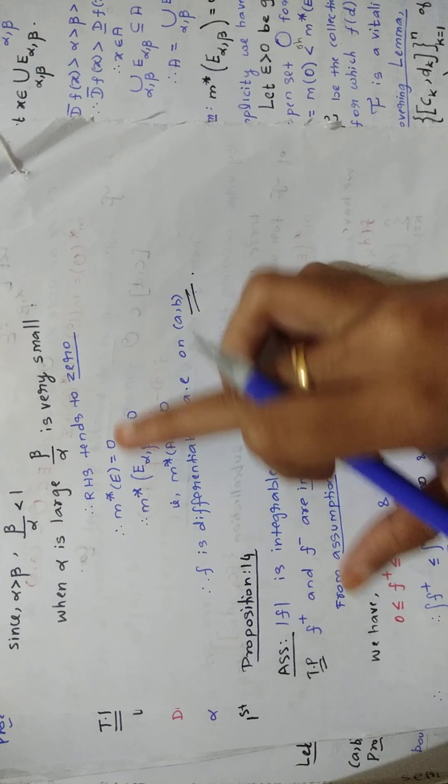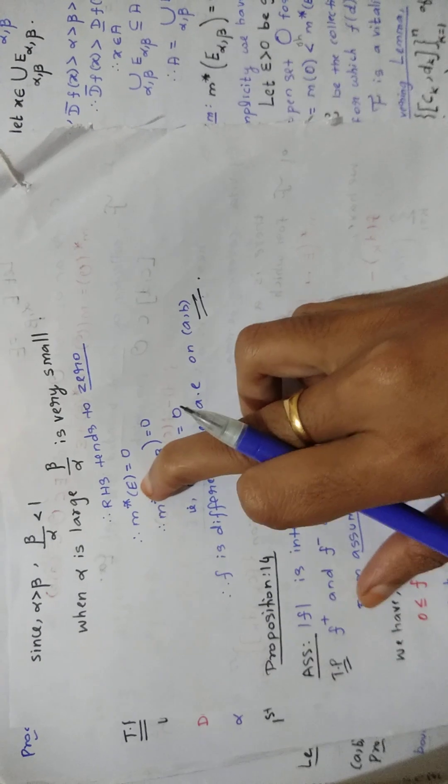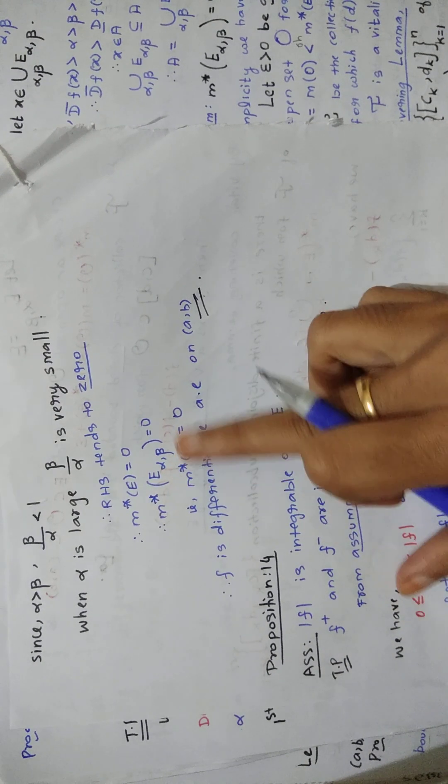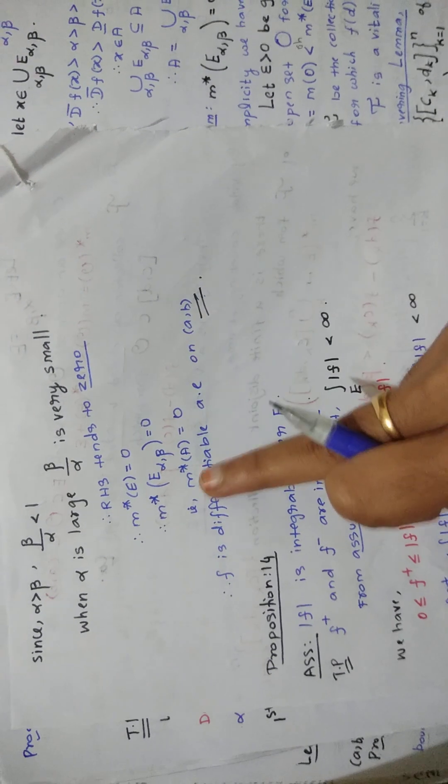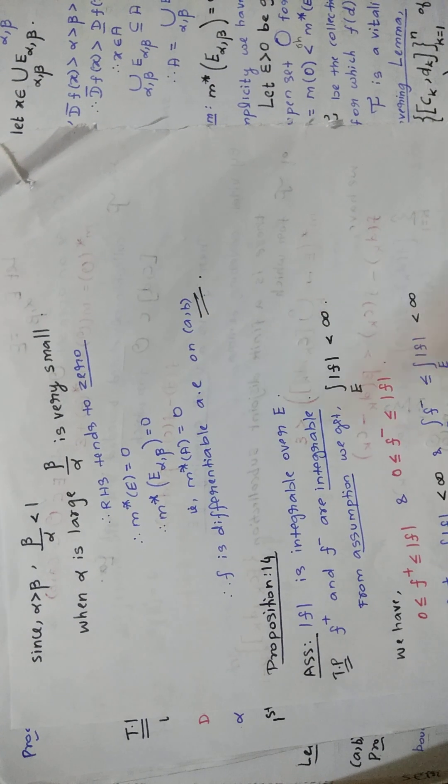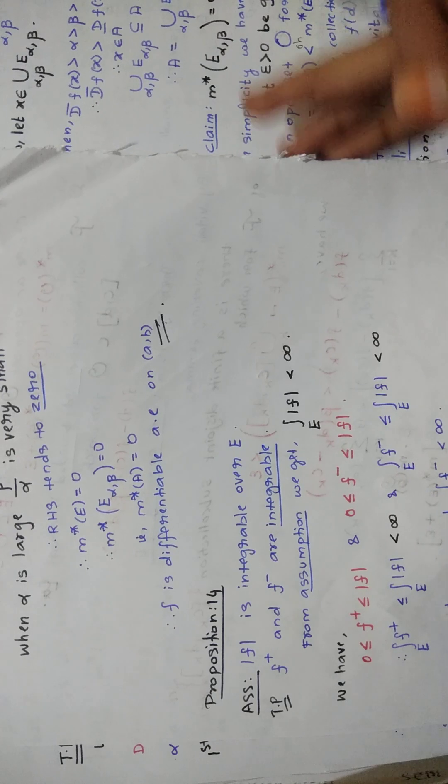So here you will get m star of E equal to 0. You are substituting in place of E, you are putting E_{alpha,beta} is equal to 0. You know that E_{alpha,beta} is A, so that is where m star of E is equal to 0. Finally, you proved f is differentiable almost everywhere.